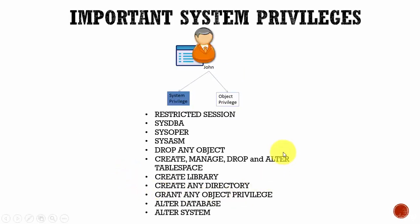Make sure you know the most important system privileges — these are what a DBA needs to know. At the end of this section, I will attach a document describing all the system privileges. Read them once, and if you have any questions, you can drop me a message.